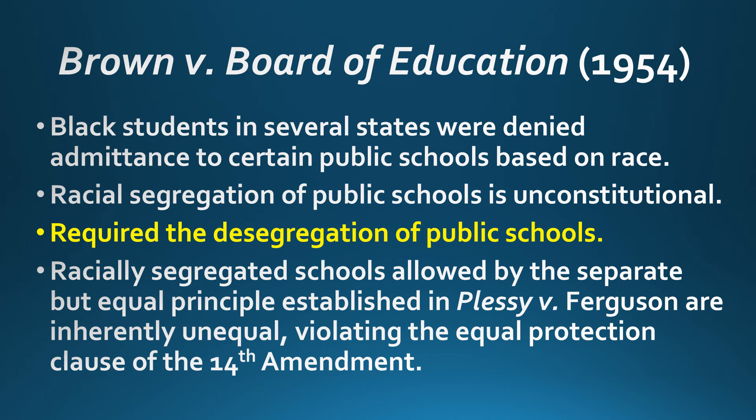Brown versus Board of Education, 1954, is one of the most famous cases in American history. Black students in several states were denied admission to public schools based on race — essentially whites-only and blacks-only schools, especially in southern states. The Supreme Court ruled that racial segregation of public schools is unconstitutional and required desegregation. The constitutional principle is the Equal Protection Clause of the 14th Amendment. Overturning Plessy versus Ferguson's 'separate but equal' doctrine, the court held that racially segregated schools are inherently unequal and violate the Equal Protection Clause.